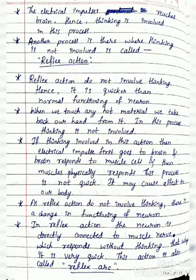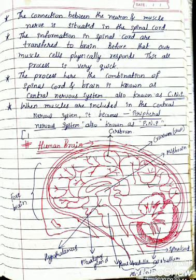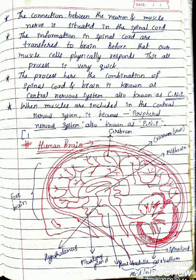In reflex action, the neuron is directly connected to the muscle nerve, which responds without thinking. That way it is very quick. This action is called the reflex arc. The connection between the neuron and muscle nerve is situated in the spinal cord. The information in the spinal cord is transferred to the brain, but before that, our muscle cells physically respond. The combination of spinal cord and brain is known as the central nervous system, also known as CNS.